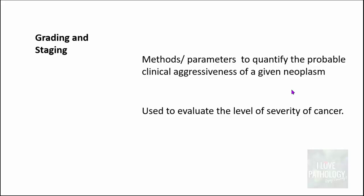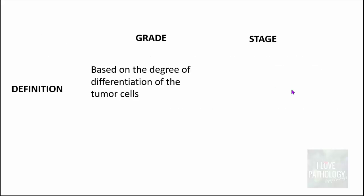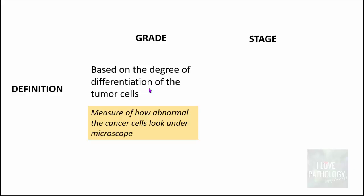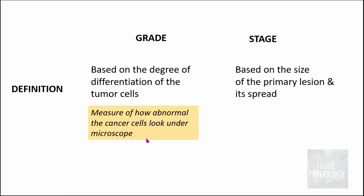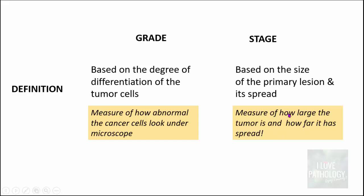Grading and staging are used to evaluate the level of severity of cancer. Grading is based on the degree of differentiation of the tumor cells — differentiation basically means how close the tumor cells resemble that of a normal tissue. Grade is a measure of how abnormal the cancer cells look under the microscope. In contrast, staging is based on the size of the primary lesion and its spread — it is a measure of how large the tumor is and how far it has spread.